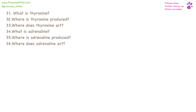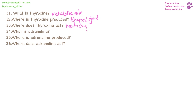Thyroxin is a very important hormone — it is important for control of the metabolic rate. It is produced by the thyroid gland and it acts on a large number of places: the heart, digestive system, the brain, and muscles.